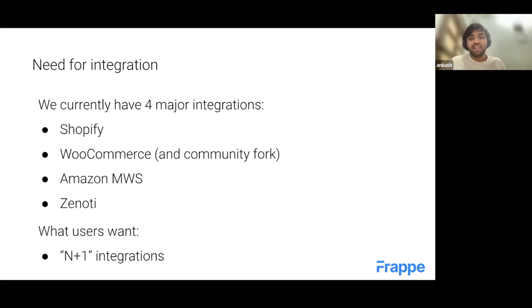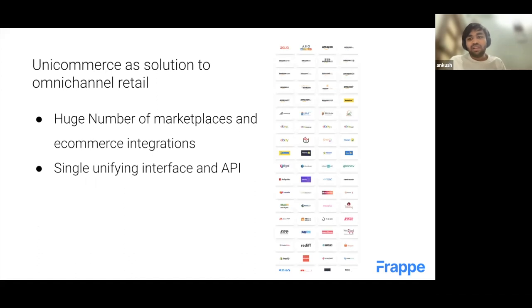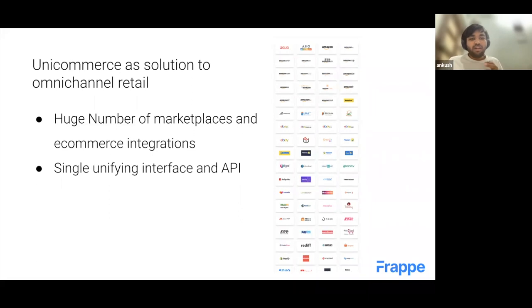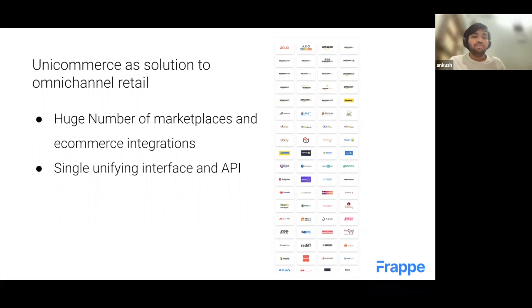Even if we integrate with many platforms, there is still demand for more. It's not feasible for us to have in-house integration with hundreds of e-commerce platforms. When we got customers who are in retail with many e-commerce platforms, they decided to use an aggregator — and Unicommerce was their first choice. Unicommerce supports a huge number of marketplaces, as you can see from this screenshot, and provides a single unifying interface where you can access and fulfill orders from all marketplaces without going to N different sites.